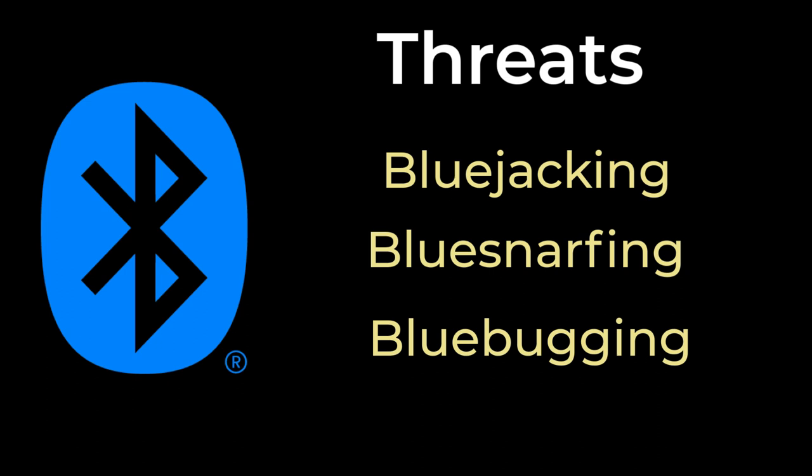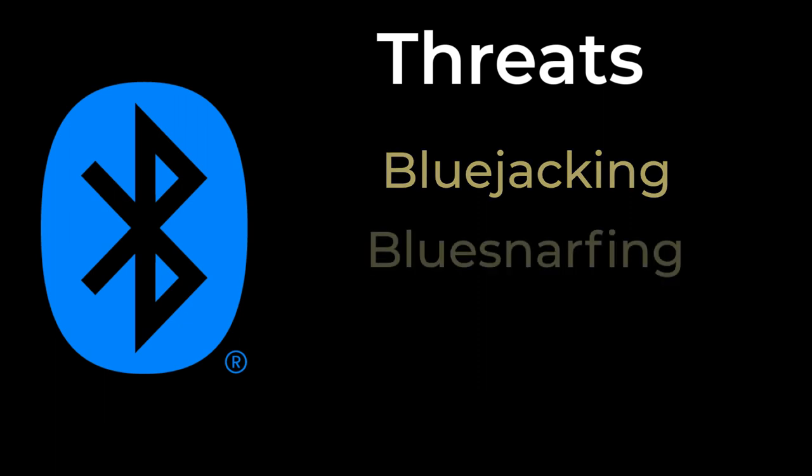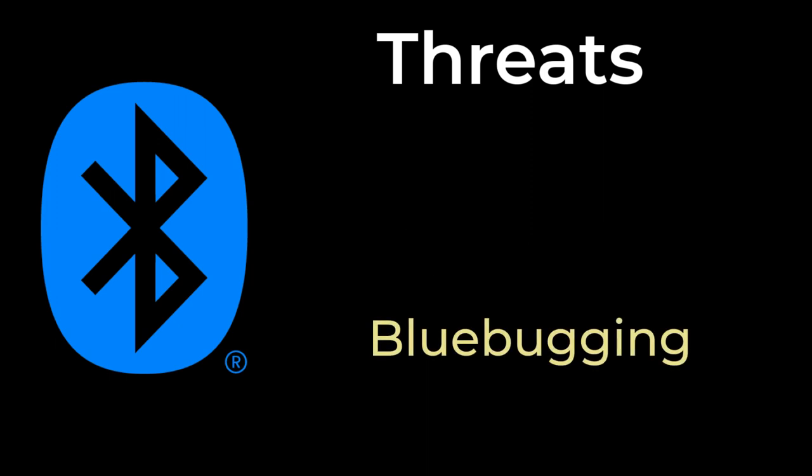Bluetooth technology has revolutionized the way we use our cell phones. It allows us to connect to various devices, such as headsets, speakers, and even cars, without the need for cables and wires. While this technology offers significant benefits, it also comes with vulnerabilities that can be exploited by cybercriminals. One of the biggest vulnerabilities of Bluetooth is its susceptibility to hacking. Bluetooth hackers can access a phone's data and even control your device remotely. This type of attack is known as bluejacking, bluesnarfing, or bluebugging. Bluejacking is when a hacker sends unsolicited messages to your Bluetooth-enabled device, while bluesnarfing is when a hacker gains unauthorized access to a device's data. Bluebugging is when a hacker takes control of a device, giving them access to the user's calls, messages, and other personal information.